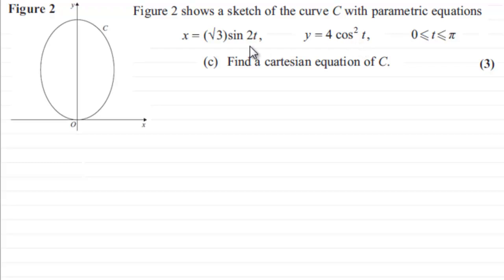What makes this tricky I think is because it requires two identities. First of all, I can see that we've got sine 2t here and it would be quite good to get cos 2t.